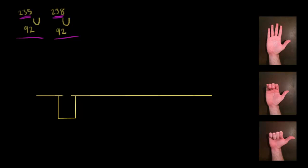Let's see how a mass spectrometer works. The first step is ionization. We're going to assume that we knock off one electron from each one of our isotopes. So we knock off an electron from each of these isotopes, and we're going to form a positive ion.